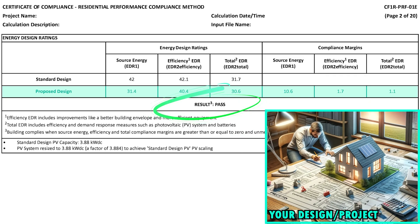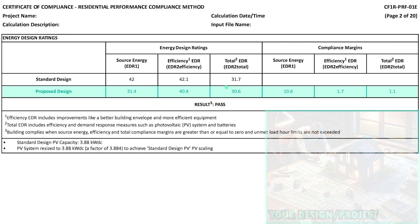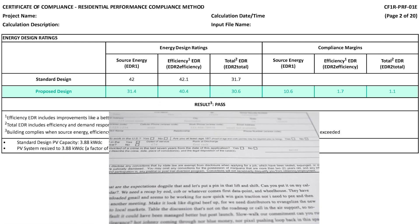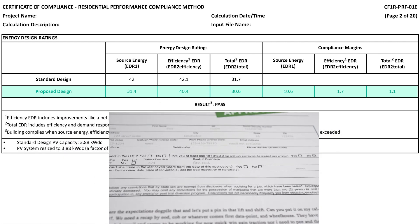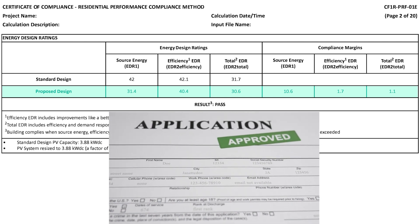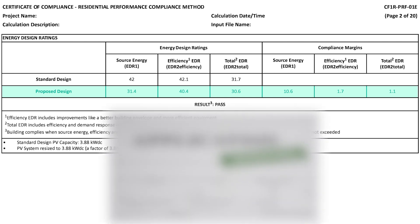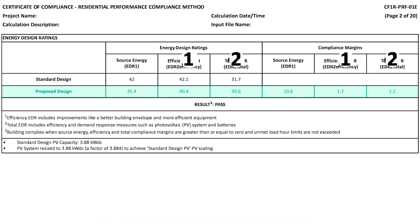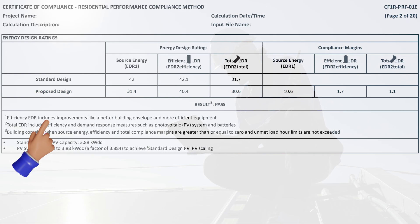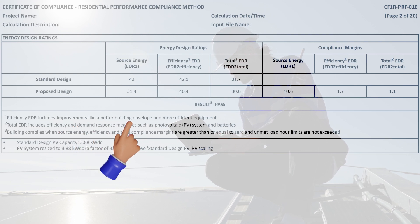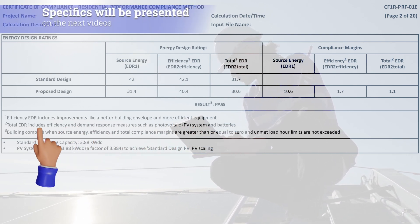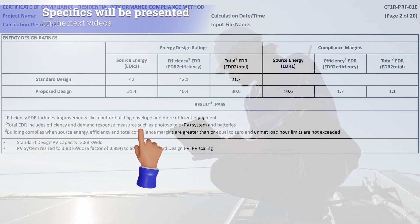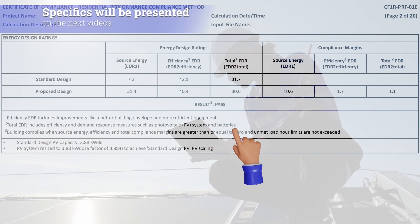A result of "passed" at the end of the table confirms that your proposed design meets the standards, which is important for obtaining building permits and proceeding with your project. Also note that footnotes in the table will tell you if your project includes energy efficiency features and renewable energy sources, like in this example.